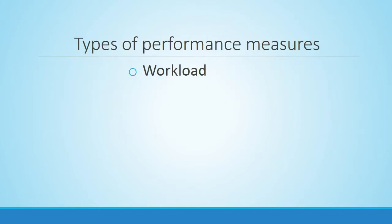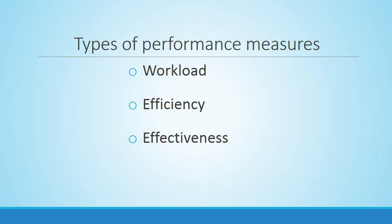There are many types of performance measures, and different sectors know them by different names. For our purposes, we'll focus on the three primary types. First, workload measures, which indicate how much work is being done. Second, efficiency measures, which usually indicate how much money or time is used in what you're producing. And last, effectiveness measures, which indicate how well something worked compared to intent.